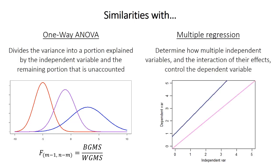There are also similarities with multiple regression. Both techniques consider multiple independent variables as well as potentially interactions between those variables. The difference is that multiple regression has at least one continuous independent variable, but that difference is much smaller than you might guess, as you'll learn by the end of this video.